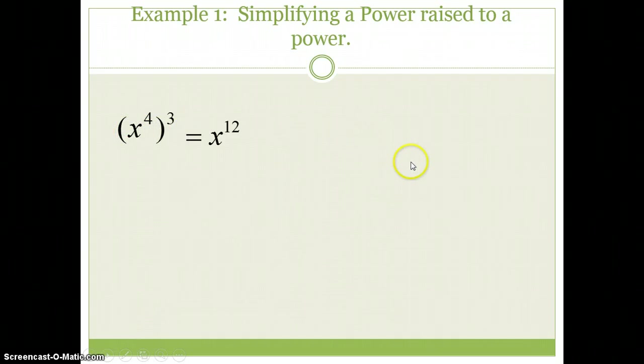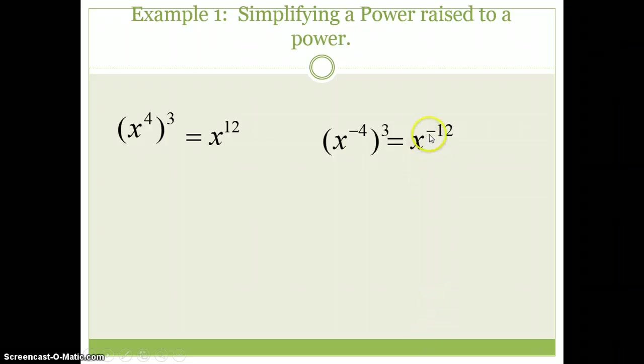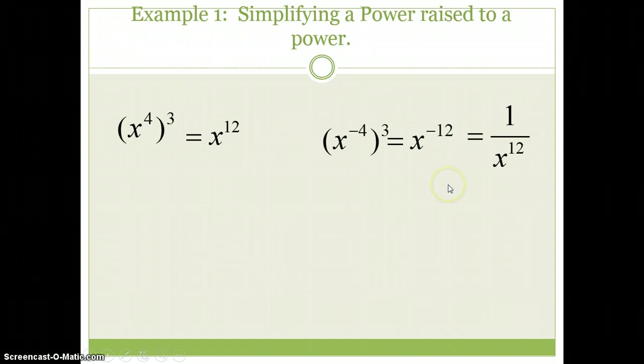Now how can we incorporate negative exponents into these problems? Pretty easily. Similar problem, except now our x is to the negative fourth. Do your power to a power first before you move anything. We're going to do power to power, negative 4 times 3 is negative 12, but we can't have that negative exponent. Negative exponents do not make this number negative, they make it a fraction. So this becomes 1 over x to the 12th.